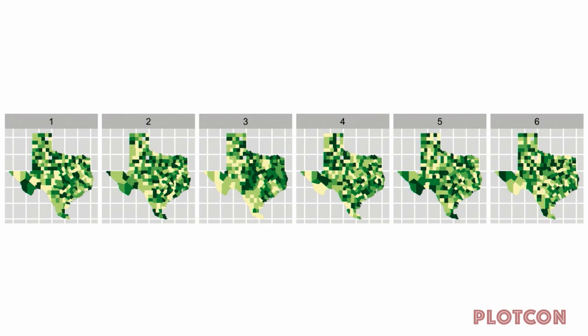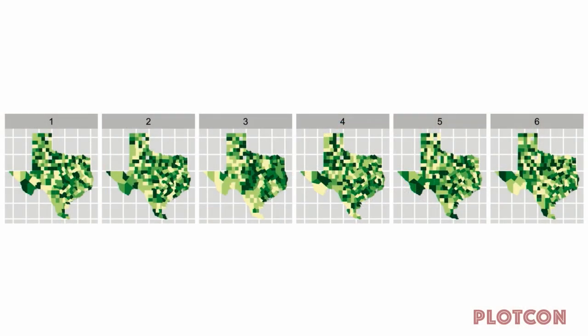Here's a fun puzzle: we have six visualizations, five showing random data and one showing real data. Which one shows real data? The answer is three, and here's the reason: it's the only one where you can actually see a gradient and a correlation between cancer rates — which this is supposed to show — and geography. This is called a lineup, like a criminal lineup, and you're looking for the suspect. It's a way of detecting whether you've picked a visualization that accurately reflects the changes in your data.